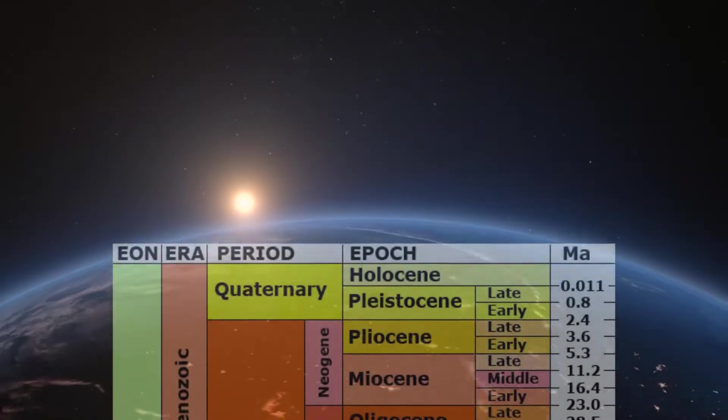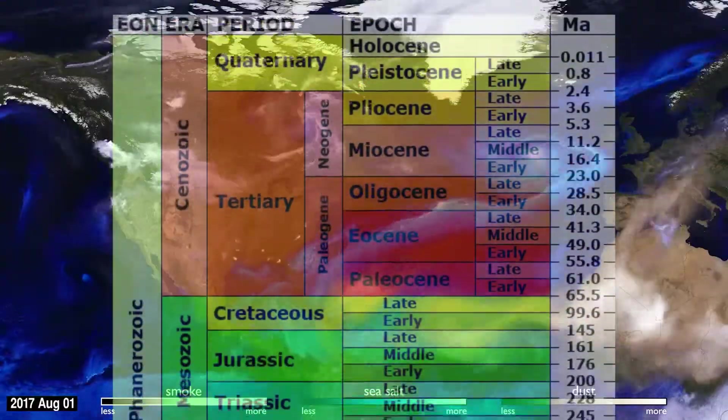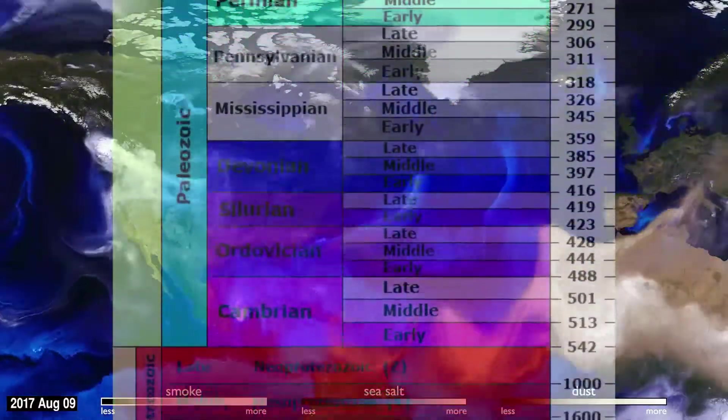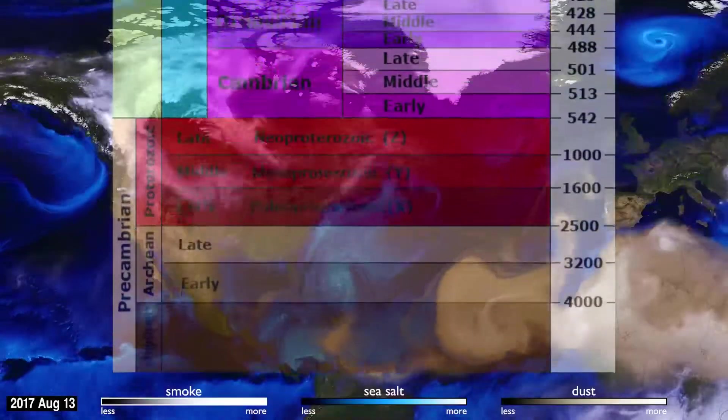If there's one thing that climate sceptics, scientists and activists can all agree on, it's that throughout Earth's history the global climate has continuously changed, sometimes quite dramatically. At different times the Earth has looked like a giant snowball, a tropical greenhouse, and everything in between.